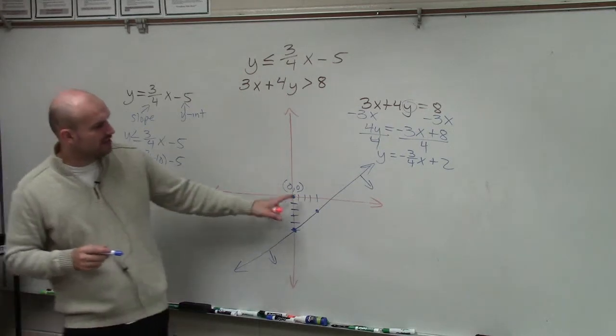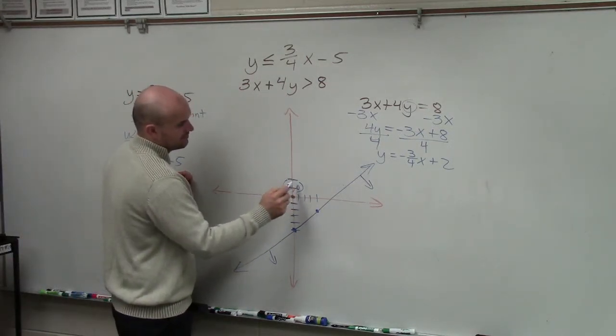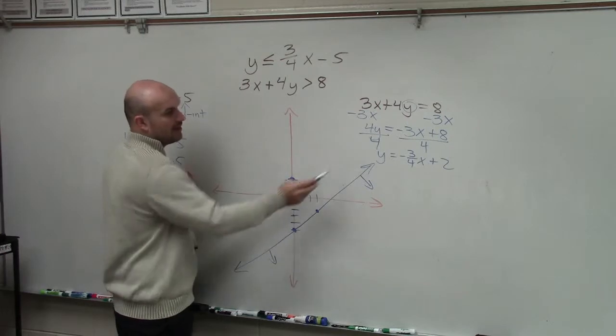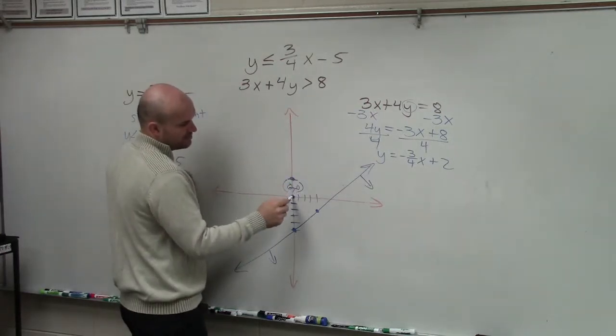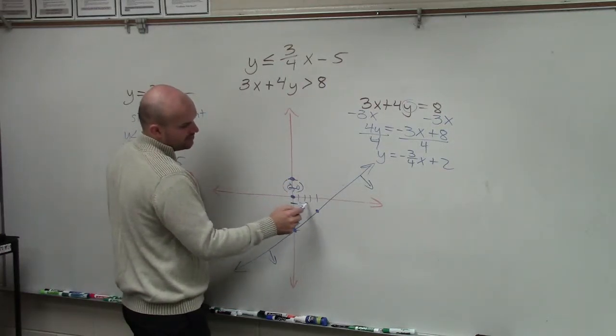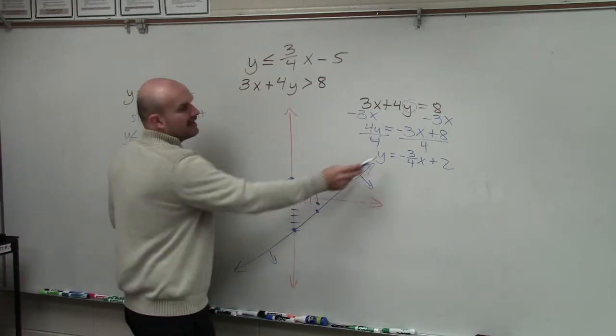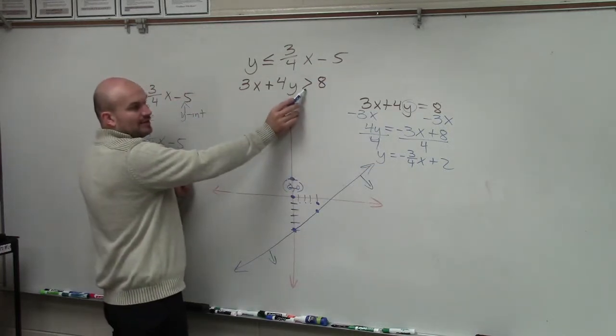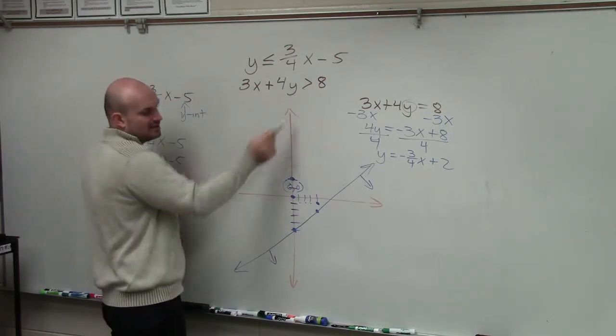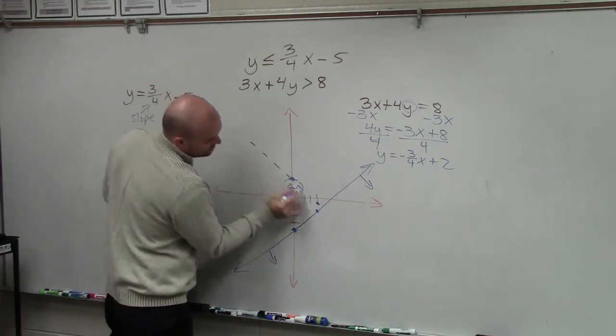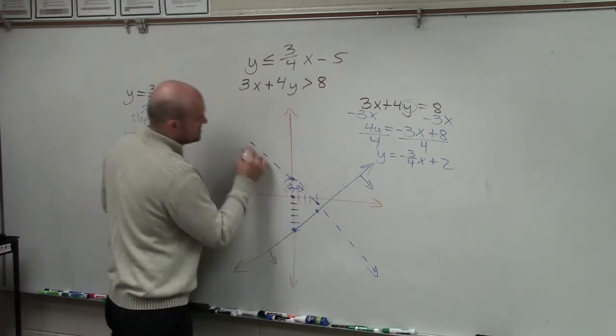Now I go up to my y-intercept of 2. Now I'm going down 3 over 4. 1, 2, 3, over 4. 1, 2, 3, 4. And now we go back to our inequality and we notice that, hey, this is a dashed line. So it's not going to be solid.